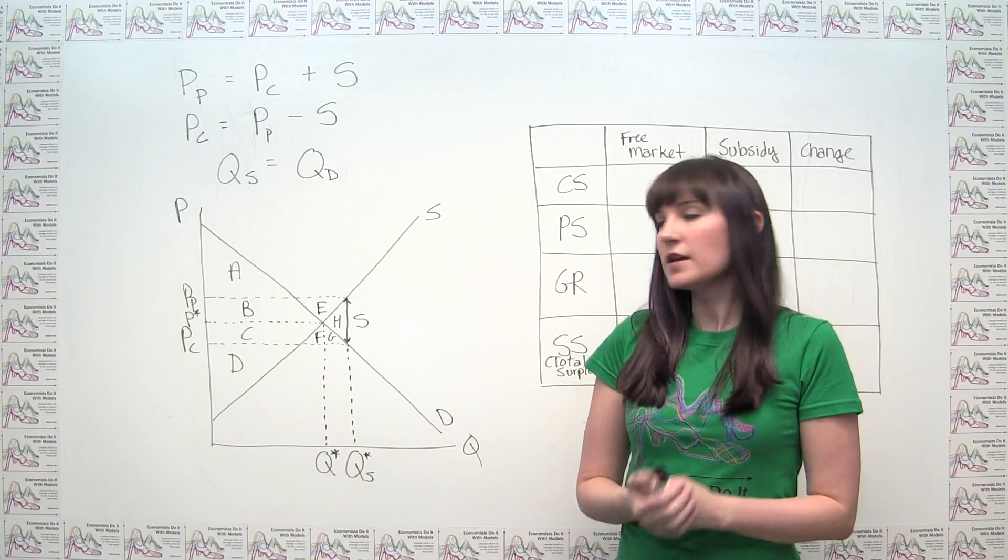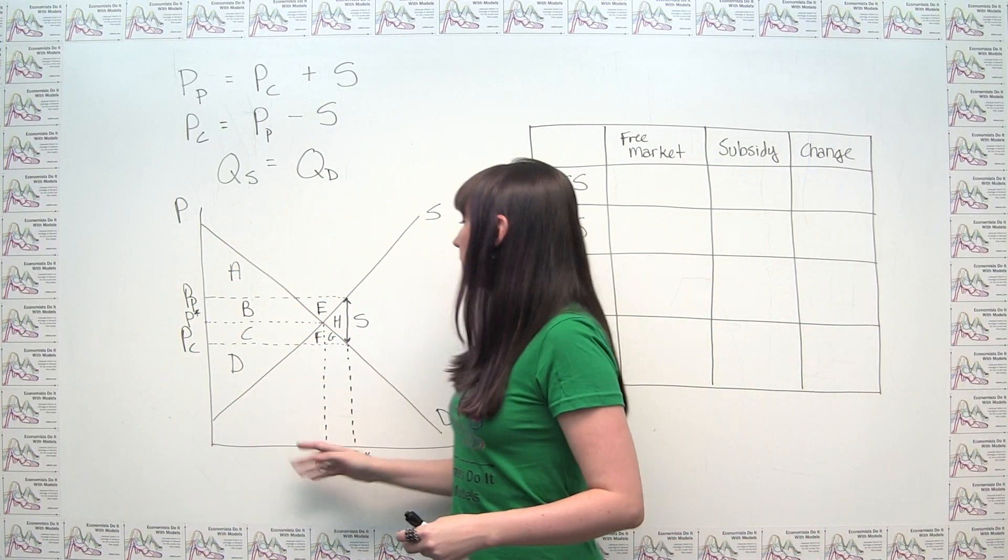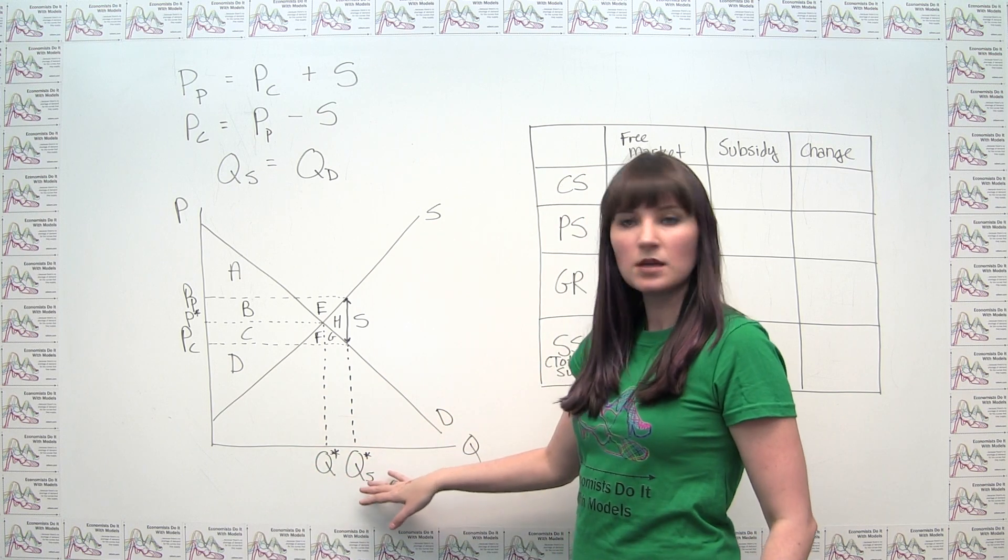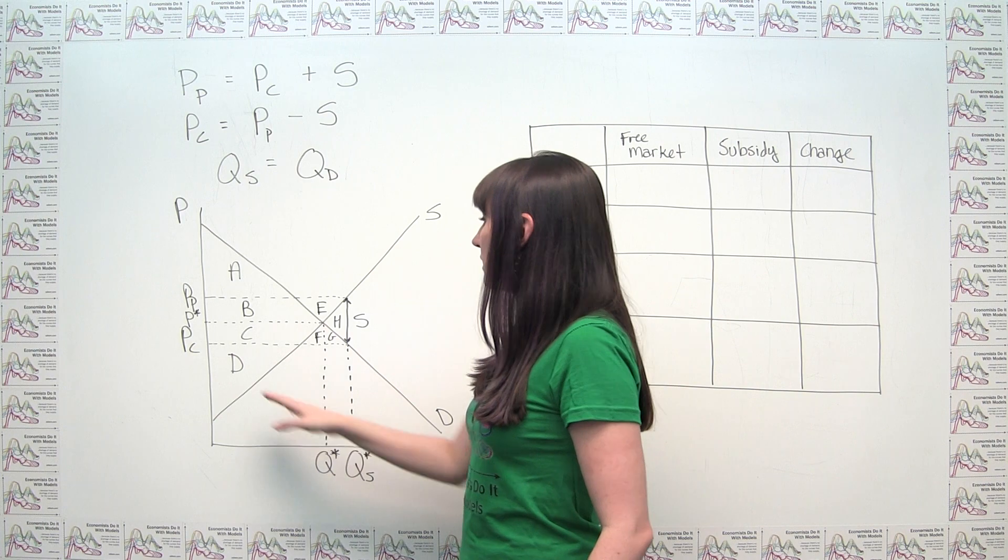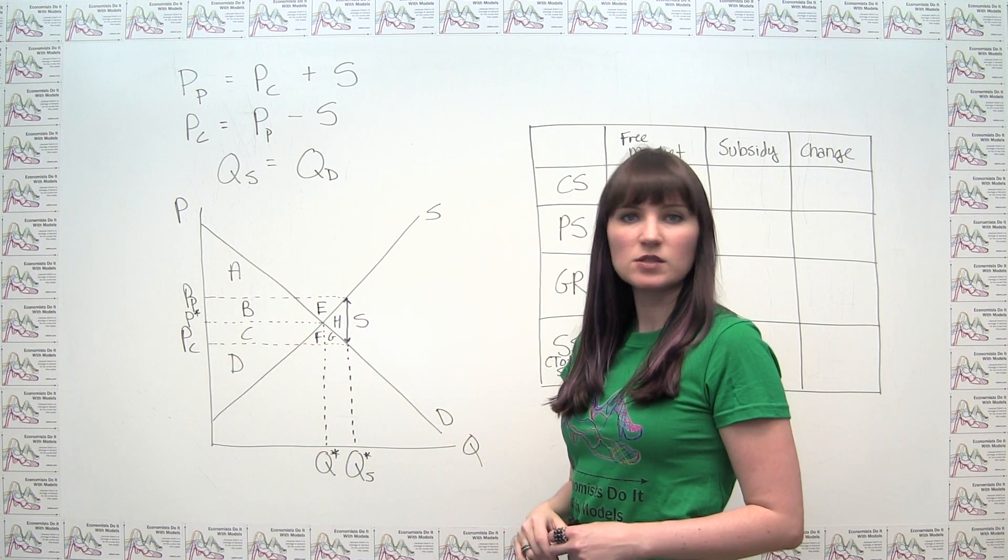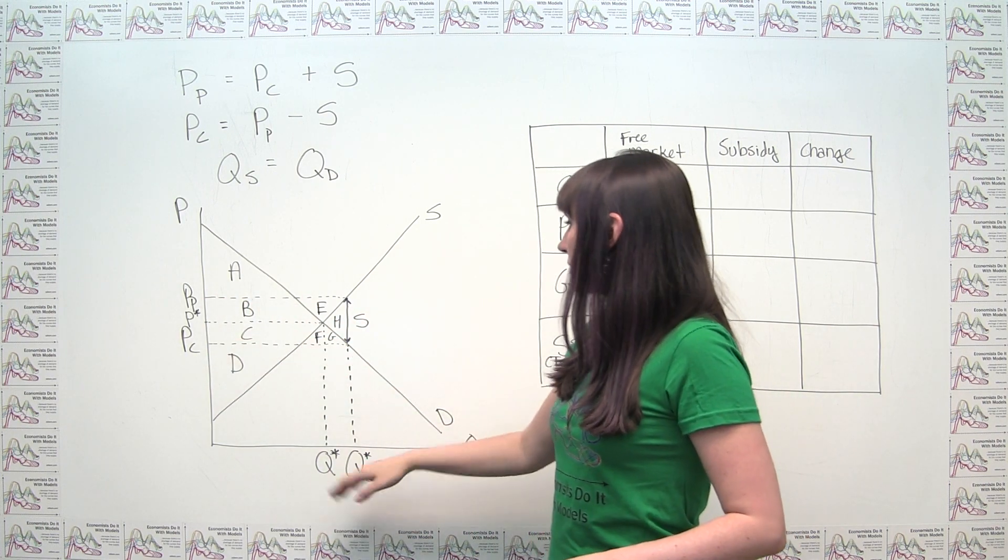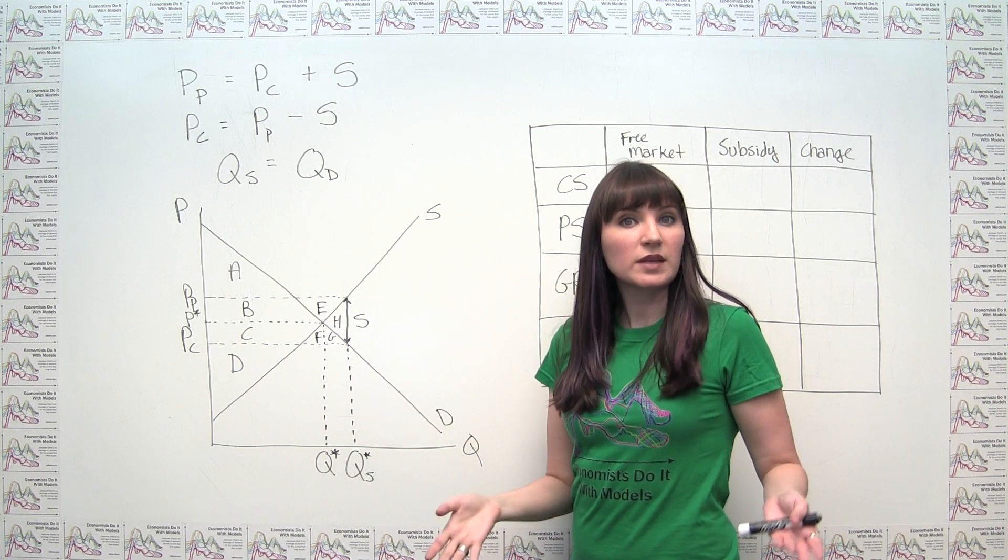To do this, I've drawn our market diagram and I put a subsidy in place. I labeled the original free market price and quantity, and also the prices to the producer and to the consumer, and the equilibrium quantity once the subsidy is put in place.